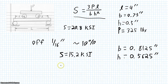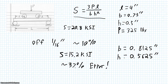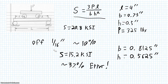That's an error of about 37%, which is pretty unacceptable in the engineering world. So it becomes clear that it's really important that we measure carefully. We decided we should measure to the nearest one-sixteenth of an inch, and even being off by one-sixteenth of an inch leads to quite a large error.